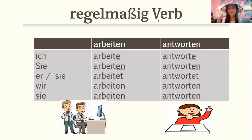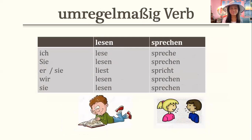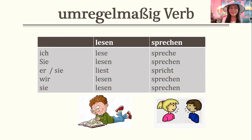Now for irregular verbs. Lesen means 'to read': ich lese, Sie lesen, er liest, sie liest, wir lesen, sie lesen. Then sprechen means 'to speak': ich spreche, Sie sprechen, er spricht, sie spricht, wir sprechen, sie sprechen.